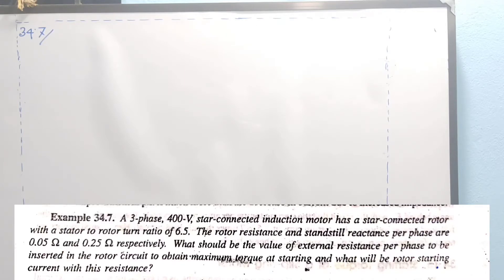What could be the value of external resistance per phase to be inserted in the rotor circuit to obtain maximum torque at starting and what will be rotor starting current with this resistance? Okay, let's start with the question.